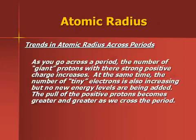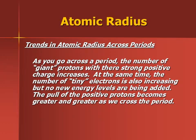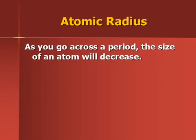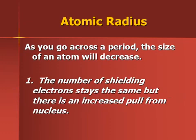For atomic radius going across a period, we're not adding any more shells. What we're adding are giant protons and little tiny electrons. The big positive protons have more effect on the overall size of the atom than just adding these little electrons that are repelling each other. So as we go across a period, these elements are getting smaller — the size of an atom decreases because we're not adding any more shells, just giant protons that are pulling in those outer electrons better.